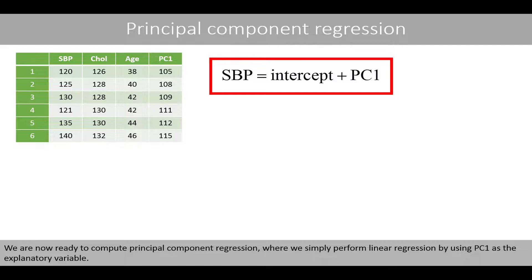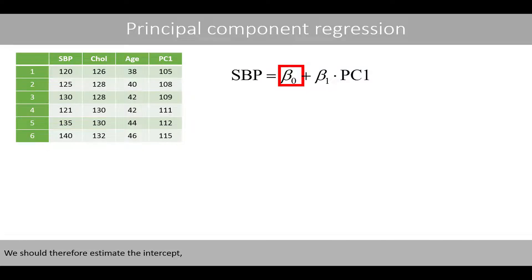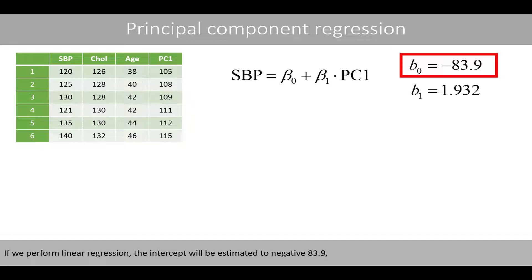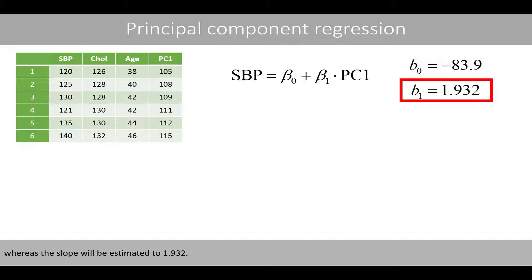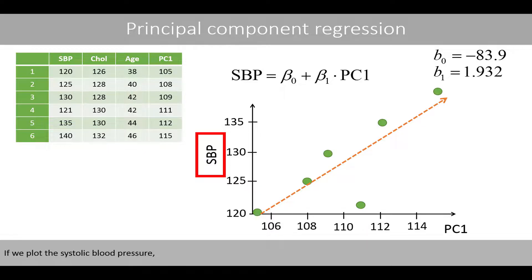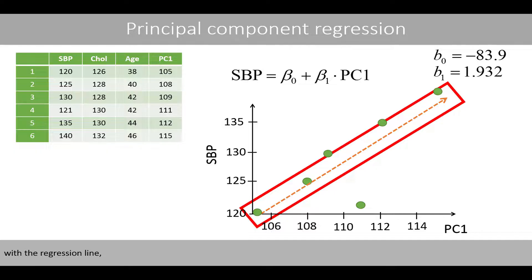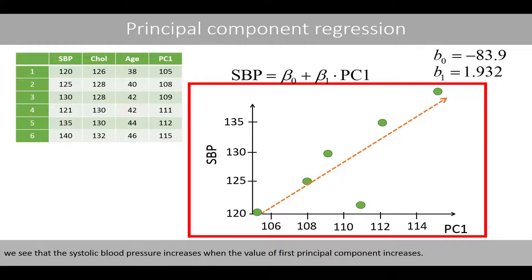We are now ready to compute principal component regression, simply performing linear regression using PC1 as the explanatory variable — estimating the intercept and slope of the equation. The intercept is estimated at −83.9 and the slope at 1.932. Plotting systolic blood pressure against PC1 with a regression line, we see that blood pressure increases as PC1 increases.